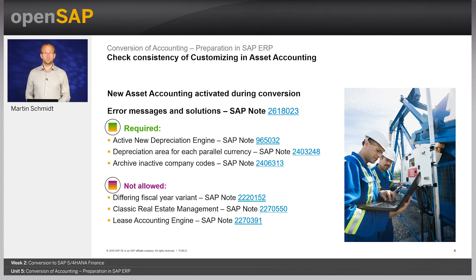To set up a new depreciation area, you do the necessary configuration and then run report RFAB_NEW, which adds the newly created depreciation area to existing asset master data. Implementation of new parallel currency depreciation areas must be done in the SAP ERP system before running Software Update Manager — it is not possible to create additional parallel currency areas in S4HANA after the technical conversion.